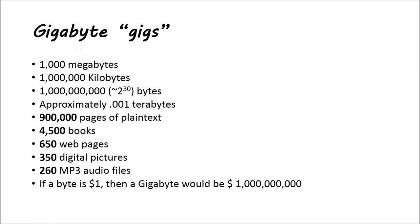After the megabyte, we have the gigabyte, also called gigs. You might hear someone say their hard drive is 500 gigs — that means 500 gigabytes. A gigabyte is 1,000 megabytes, 1 million kilobytes, and 1 billion bytes — approximately one one-thousandth of a terabyte. If a byte were $1, then a gigabyte would be one billion dollars.